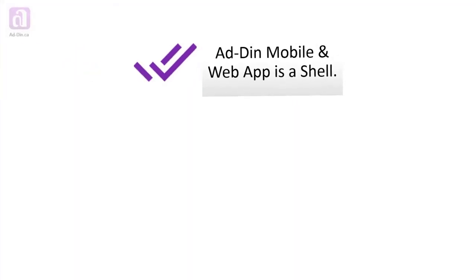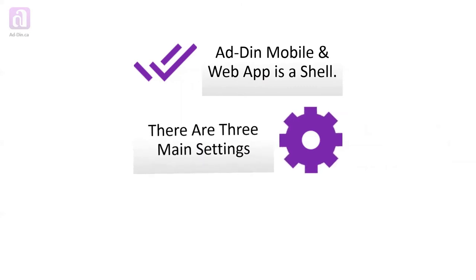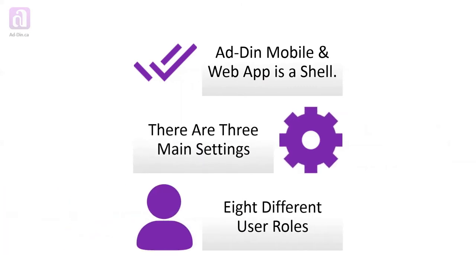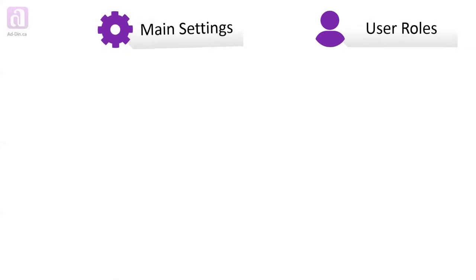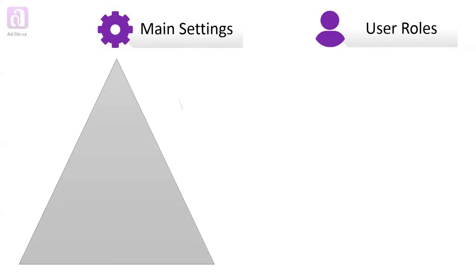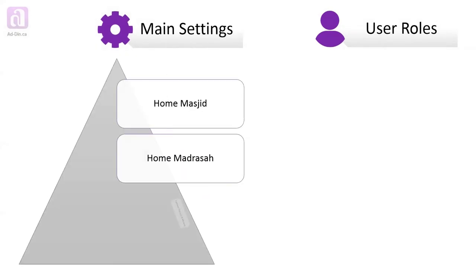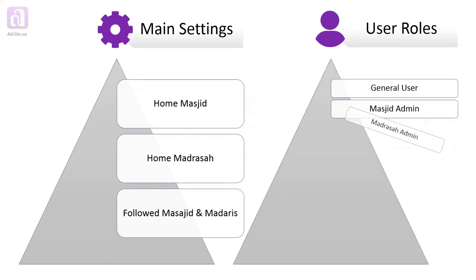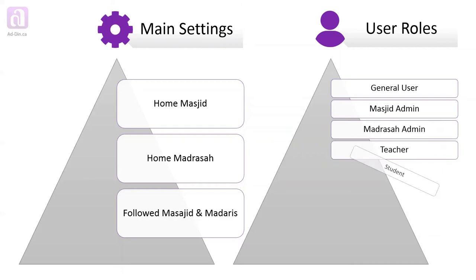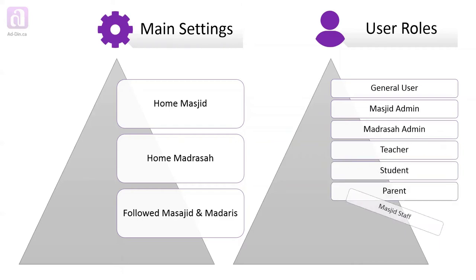Ad-Deen mobile and web app is a shell. There are three main settings and eight different user roles. The main settings consist of setting up a home masjid, home madrasa, and followed masajid and madaris. The user roles consist of general user, masjid admin, madrasa admin, teacher, student, parent, masjid staff, and a volunteer.